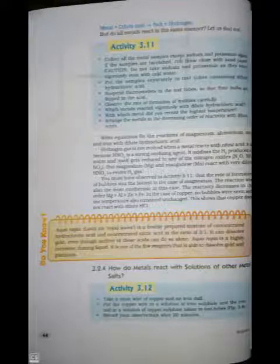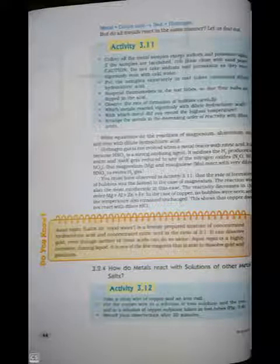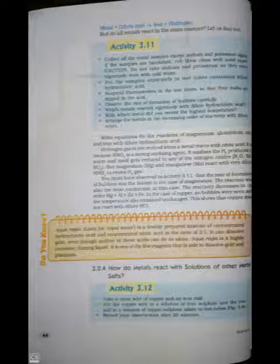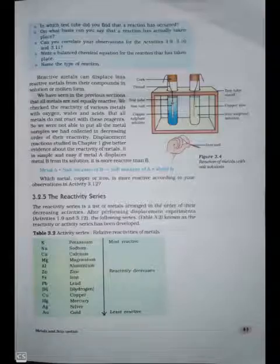3.2.4 How do metals react with solution of other metal salts? Activity 3.12: Take a clean wire of copper and an iron nail. Put the copper wire in a solution of iron sulfate and the iron nail in a solution of copper sulfate taken in test tubes. Figure 3.4. Record your observation after 20 minutes. Page number 45. In which test tube did you find that a reaction has occurred? On what basis can you say that a reaction has actually taken place? Can you correlate your observations for activities 3.9, 3.10, and 3.11? Write a balanced chemical equation for the reaction that has taken place. Name the type of reaction.